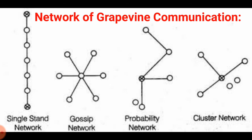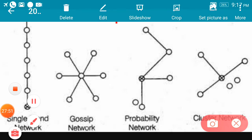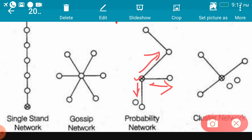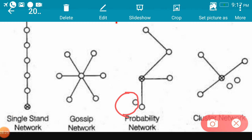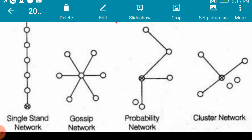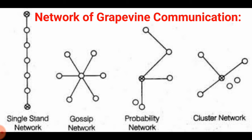The third grapevine network is the probability network. Here, the person who wants to communicate some information may communicate with A, may communicate with B, may communicate with C, or may not communicate with someone at all. The person transferring information decides randomly — they can talk to anyone or skip anyone. So one person may be left out entirely. This is the probability network — where a person may or may not communicate with others.